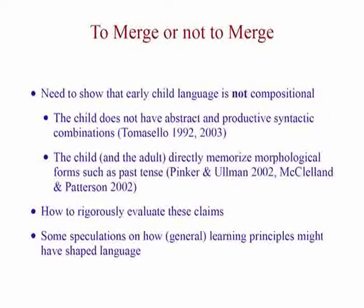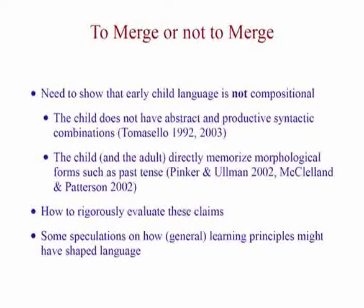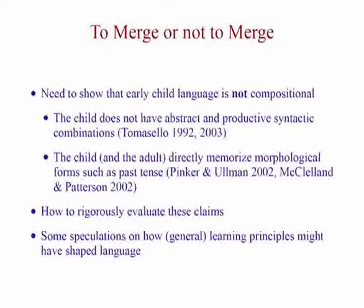There are two prominent cases that have been put forward. One is Tomasello's idea — in contradiction to a lot of things you can say about how language is learned — that a child doesn't have an abstract and productive system of grammar; it's about usage-based models. The other is in the famous past tense debate, where both sides of the debate agree that irregular verbs are directly memorized, and therefore not compositionally formed. But everybody in linguistics says that irregular verbs are actually compositionally formed.